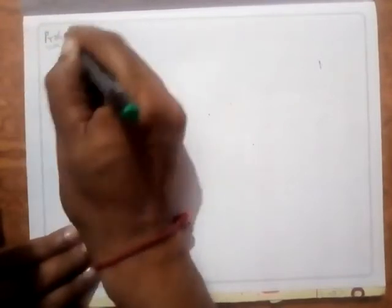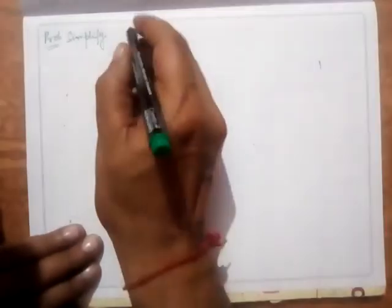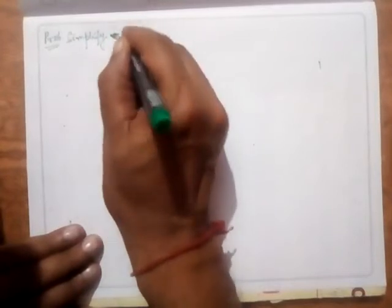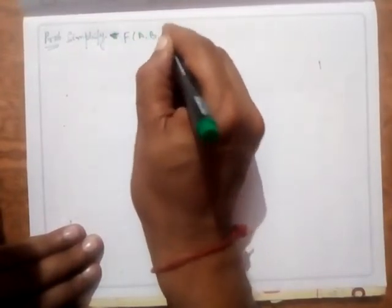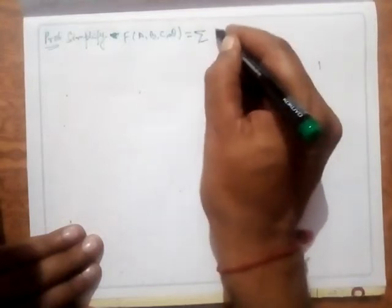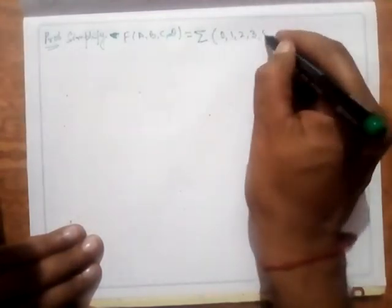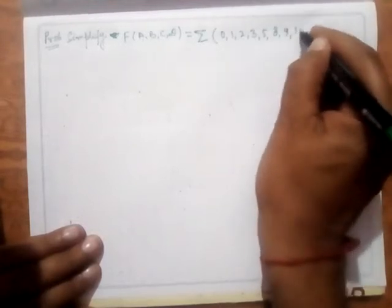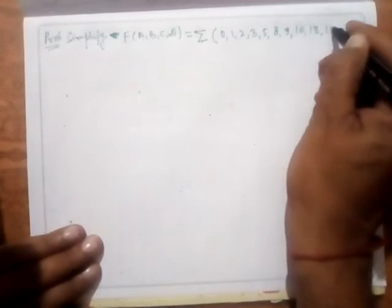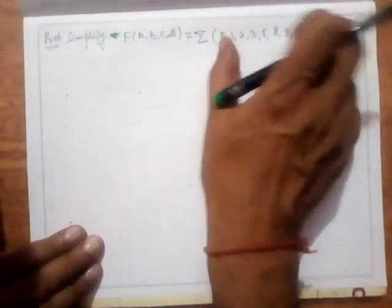Next, let's take a problem based on a four-variable K-map. Simplify the Boolean function F(A,B,C,D), which is equal to the sum of minterms: 0, 1, 2, 3, 5, 8, 9, 10, 13, and 15. This big expression — ā b̄ c̄ d̄ + ā b̄ c̄ d and so on — I want to simplify or minimize.